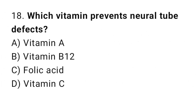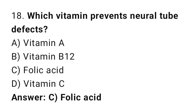Question 18: Which vitamin prevents neural tube defects? The right answer is C, folic acid. Folic acid prevents defects like spina bifida.